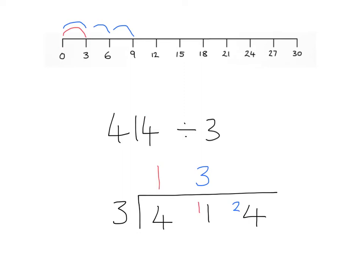Finally I'd see how many 3's go into 24 and I'd count the jumps there 1, 2, 3, 4, 5, 6, 7, 8. So the answer there is 8. So my final answer is 138.